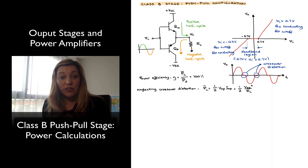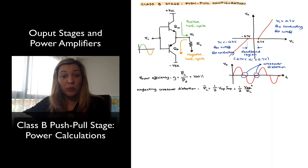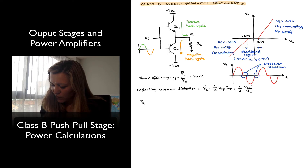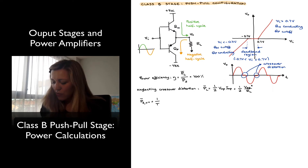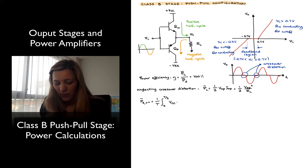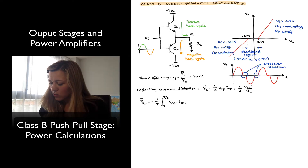Now we need to calculate the average power delivered by the supplies. We have two supplies: VCC and negative VEE. VCC will be delivering power during the positive half cycle, and VEE will be delivering power during the negative half cycle. So calculating the supply power from V+, it will be equal to 1 over the period times the integral from 0 to half the period — only considering the positive half cycle — of VCC times I_CN, the current flowing through the N transistor, which is the only one conducting during the positive half cycle, times dt.